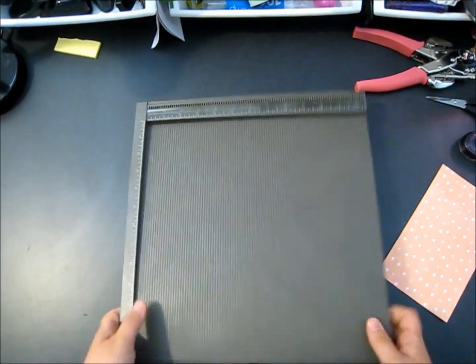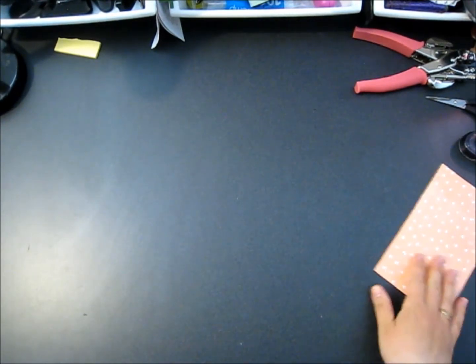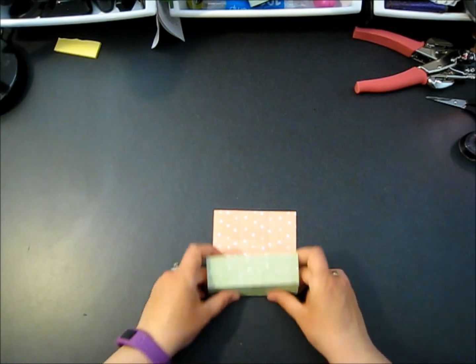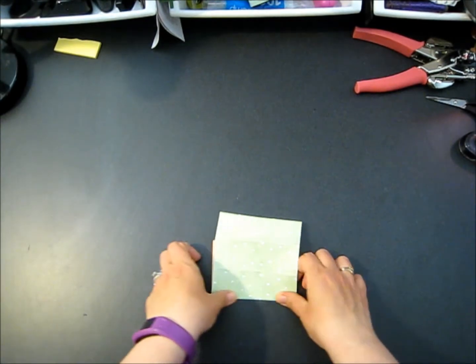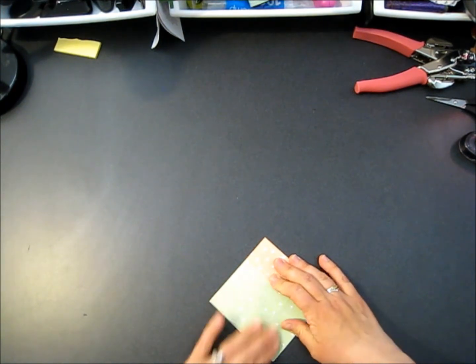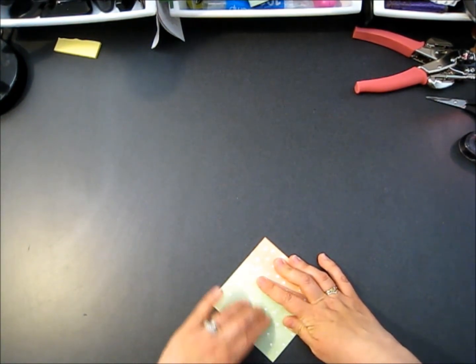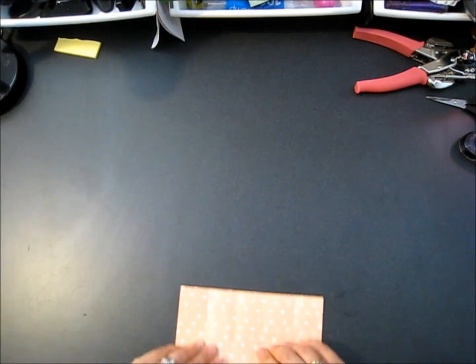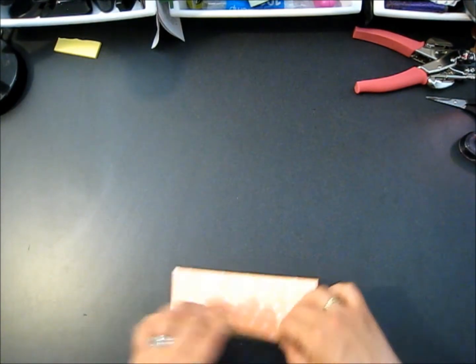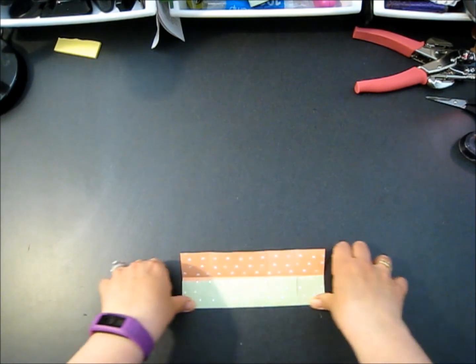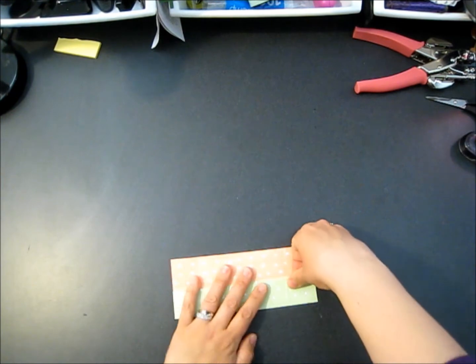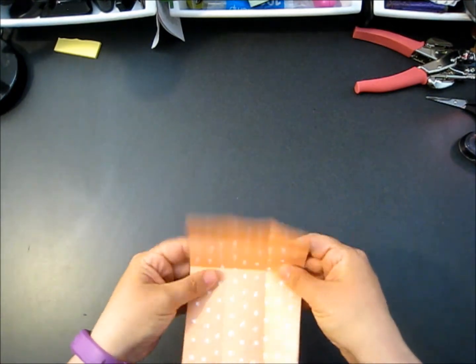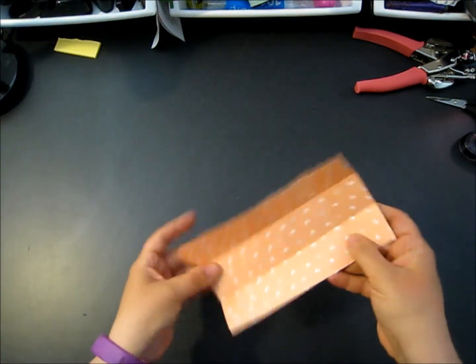Now what I prefer to do, and just because I'm doing it in the video doesn't mean you have to, I prefer to fold all of my score lines first. I find especially when I'm working with DSP that it helps me see my score lines better when I'm going to cut. With some of the DSP it's very patterned, very busy, and it's very difficult to see the score lines. So there you should be able to see we've got even squares everywhere on this page.